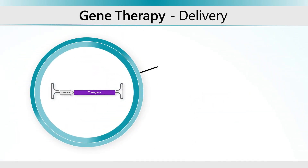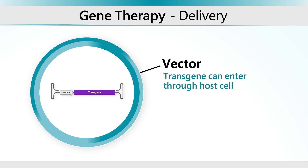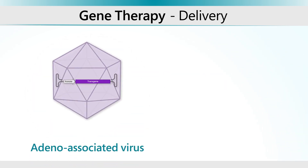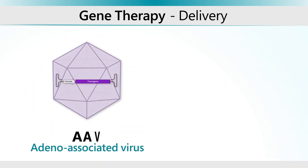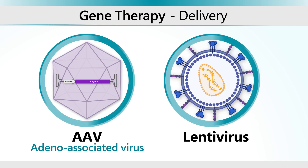Gene therapy can be delivered using bacterial and viral vectors, which enable foreign DNA, like the functional transgene, entry into the host cell. Adeno-associated virus (AAV) and lentivirus have been used as an effective delivery system for transporting therapeutic genetic material into living tissue. These viruses are transformed into gene therapy vectors through the addition of new DNA and removal of most of their viral components.